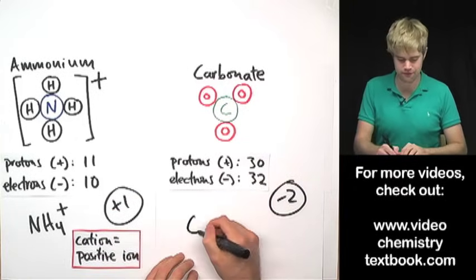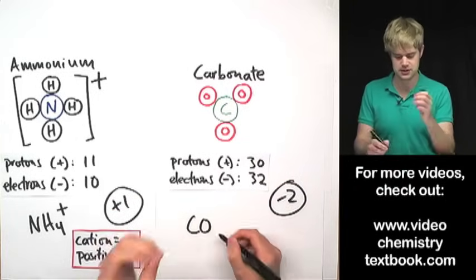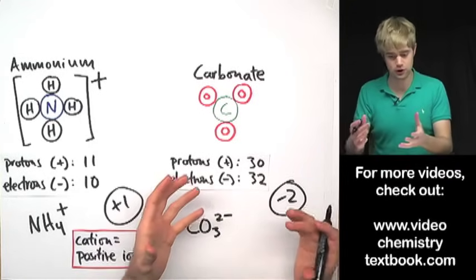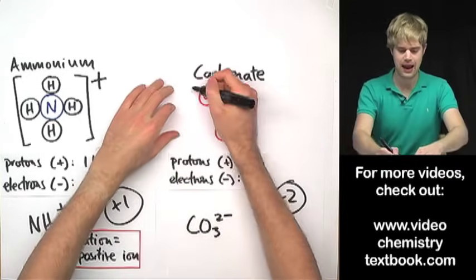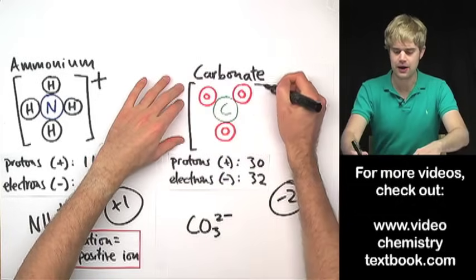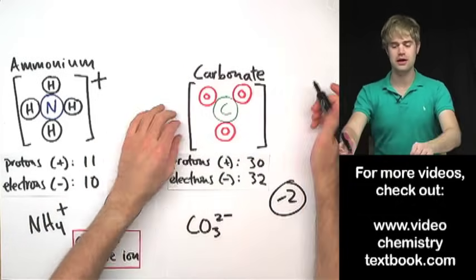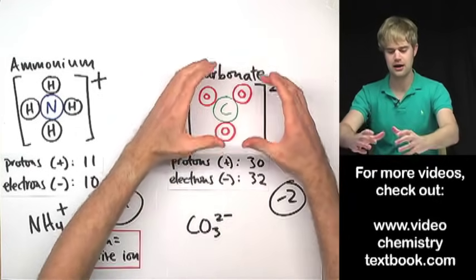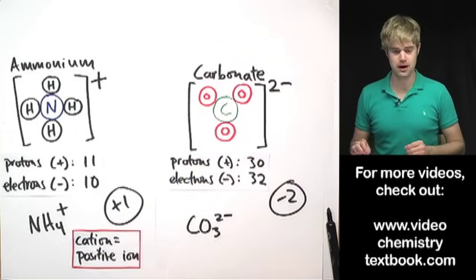I can write the formula for this polyatomic ion as CO3, two minus, one carbon, three oxygens, total net charge of two minus. And then I write my structure in brackets and put a two minus here to show that this whole thing has a net charge of two minus.